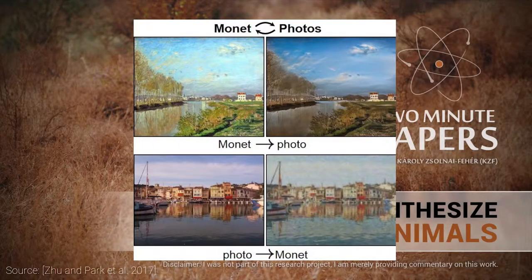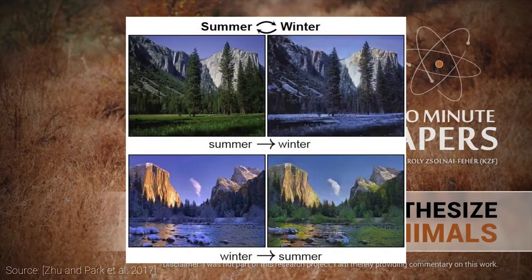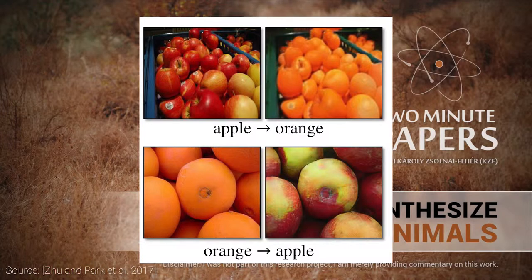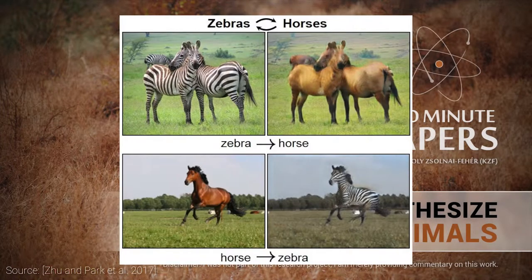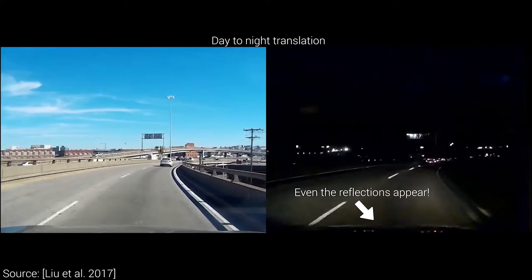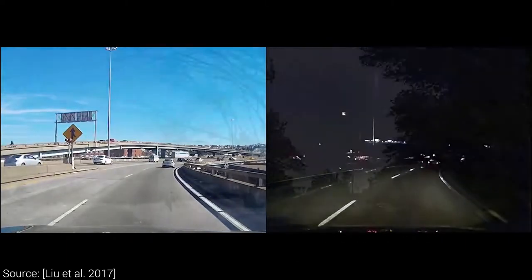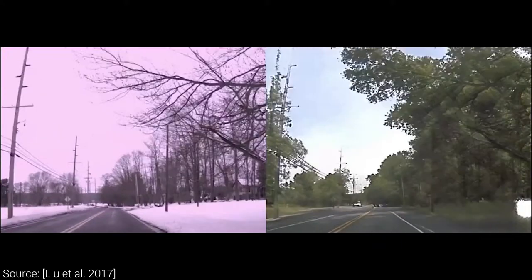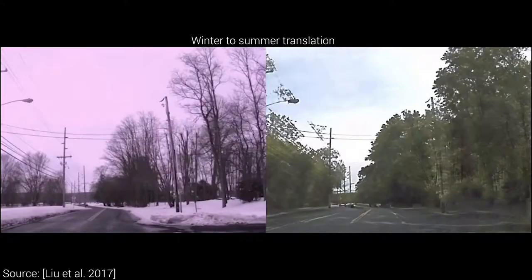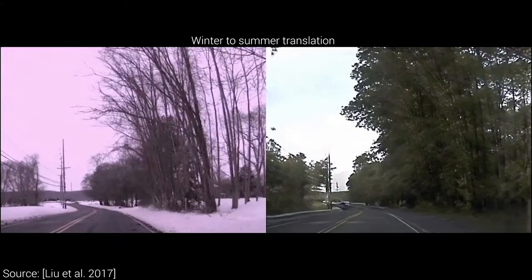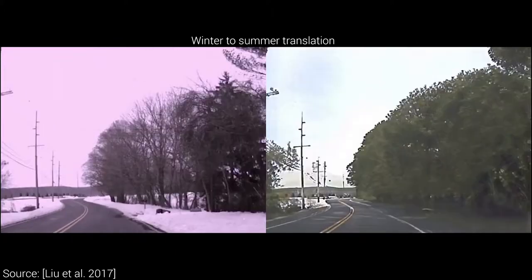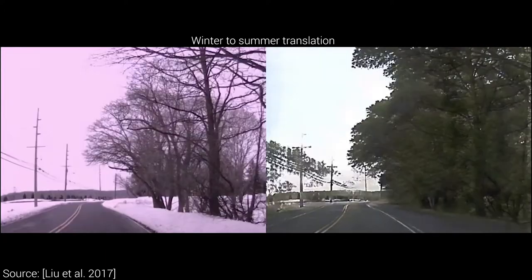This one is about image translation, which means that the input is an image, and the output is a different version of this input image that is changed according to our guidelines. For instance, an image of a city can be translated to a map of this city, or a daytime photo or video can be converted to appear as if it were shot during the night.